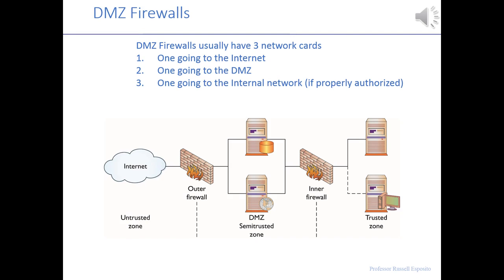The DMZ has three network cards: a network card to the internet, a network card to the back internal network, and a network card to the other devices in the DMZ, so those devices can connect and communicate. That's another way of looking at the demilitarized zone — a very common concept in network security.